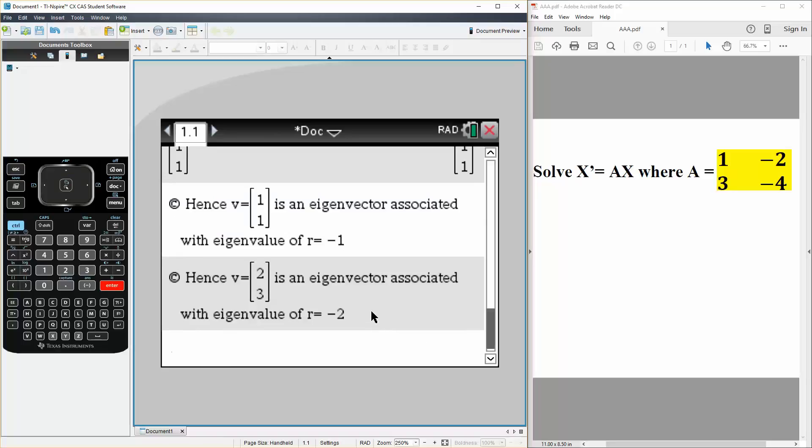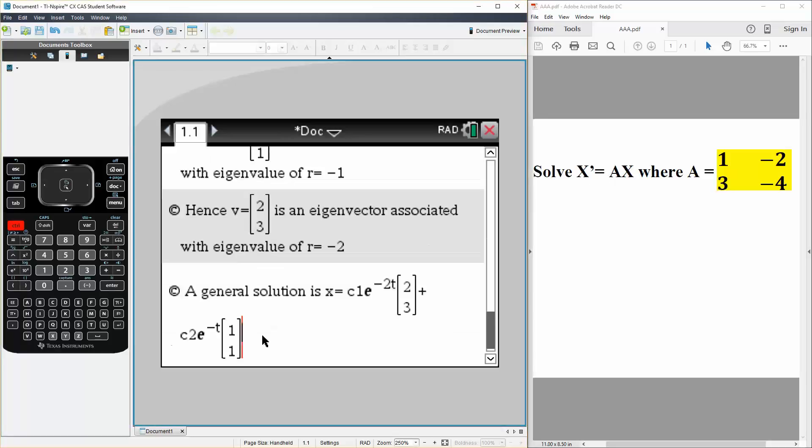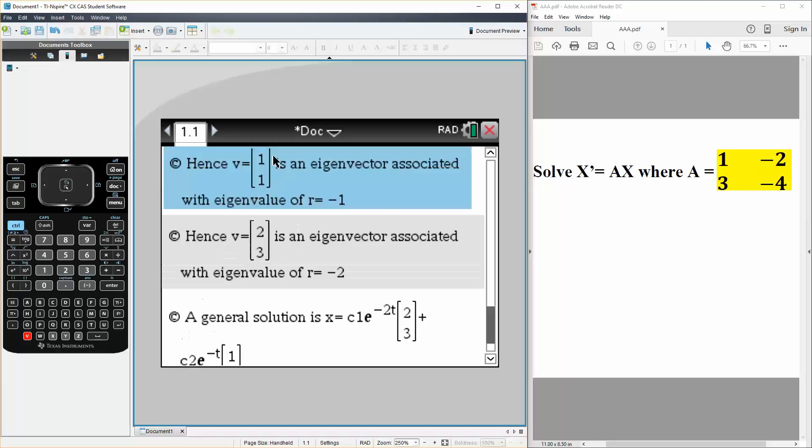And so now we want to get a general solution for this problem. And the general solution is a combination of the two, and it's going to be x is equal to C1 e raised to negative 2t times [2, 3], this is because negative 2 comes from r is equal to minus 2, and the eigenvector was [2, 3], plus C2 e raised to negative 1t, because r is negative 1, and the eigenvector was [1, 1].